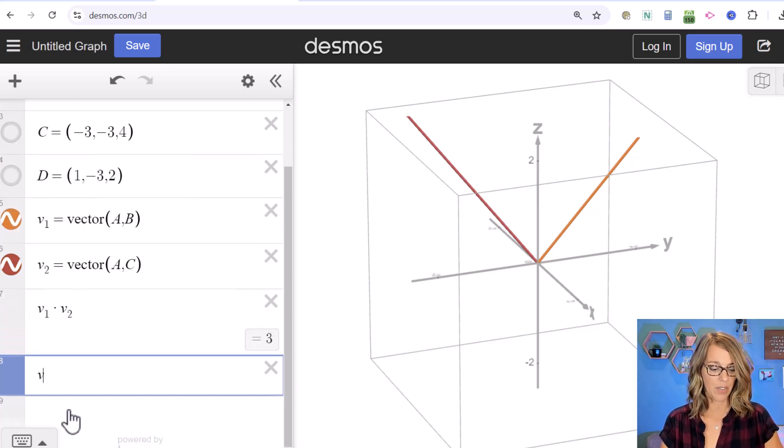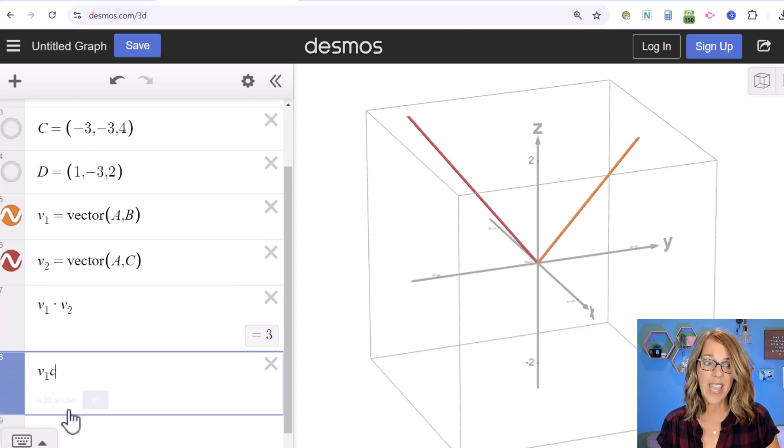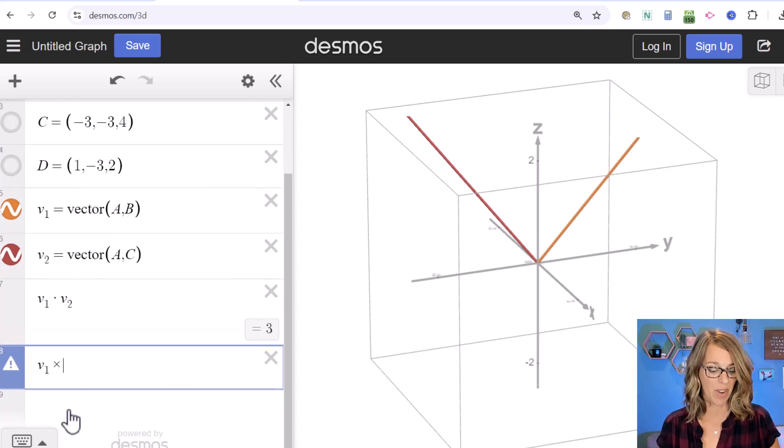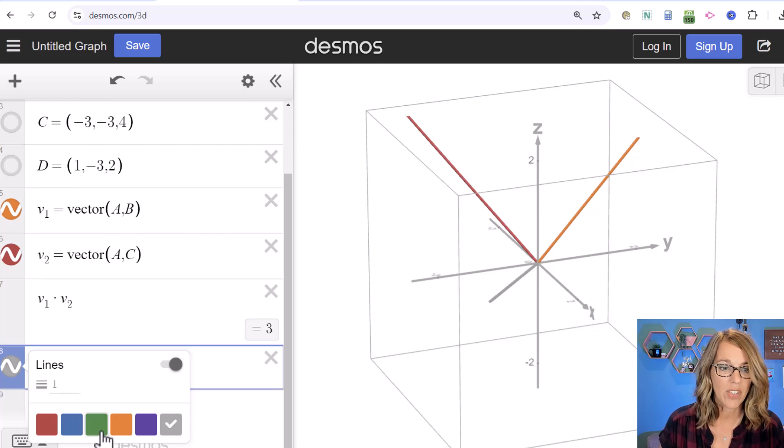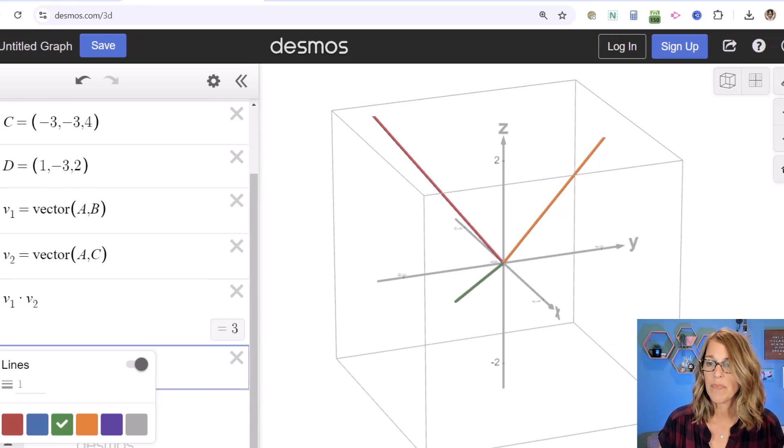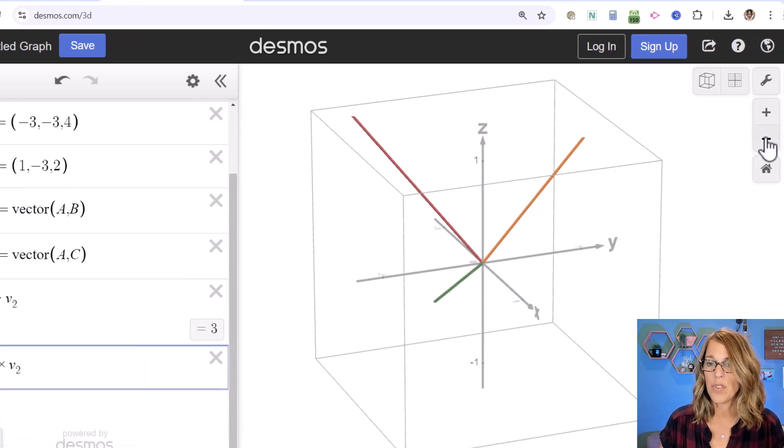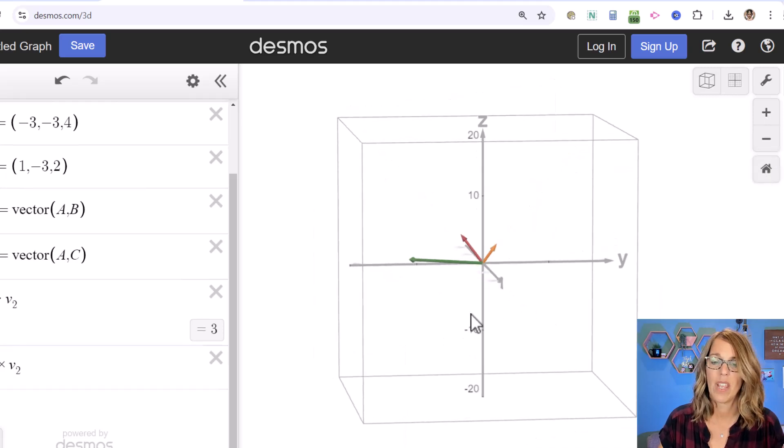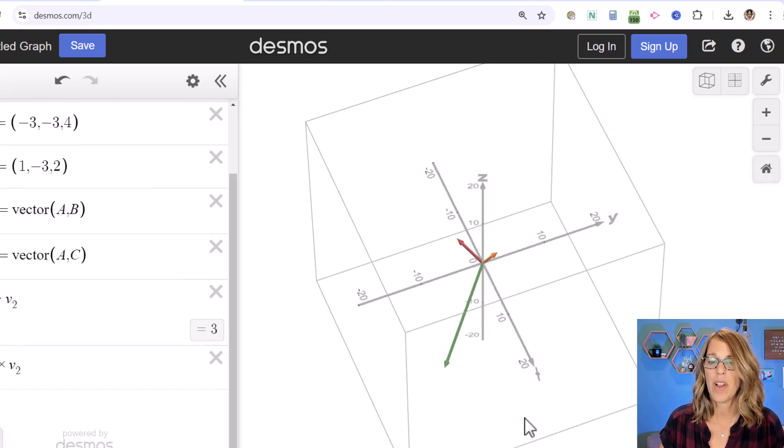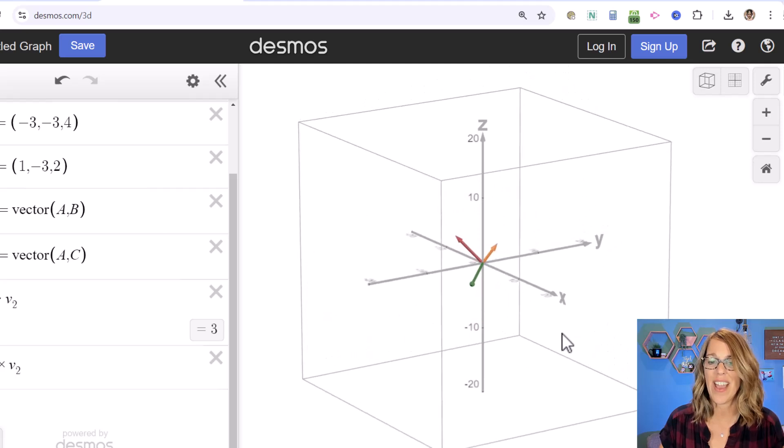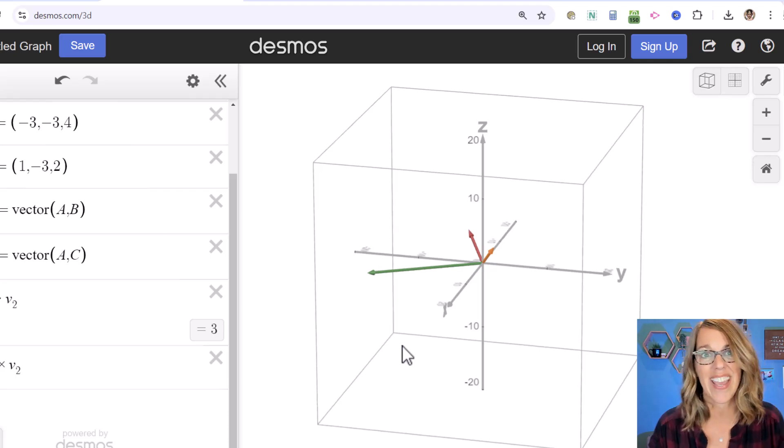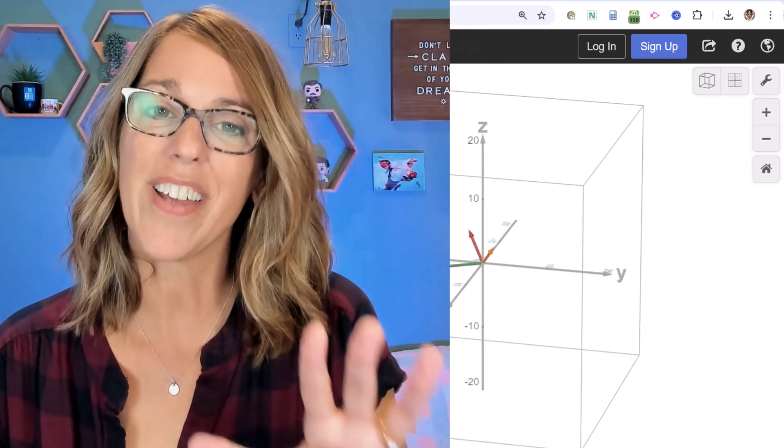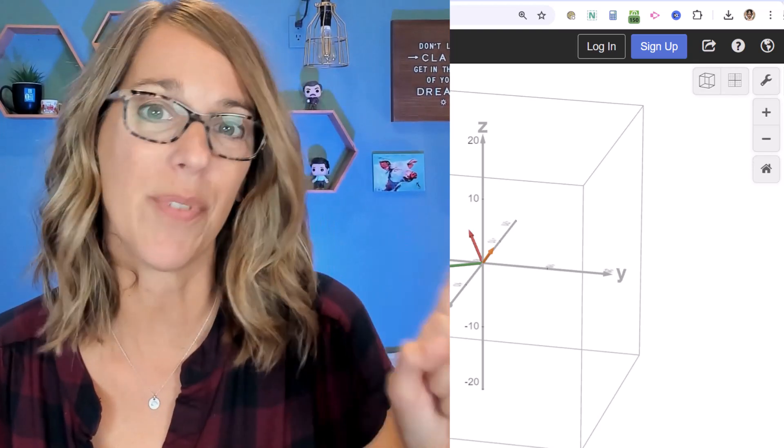To get the cross product, we do something similar: v₁ cross v₂. Let me change the color to green and zoom in. You can see that the cross product, the green vector, is perpendicular to both vectors 1 and 2. Play with this and explore—I've got another video on Desmos in 3D.